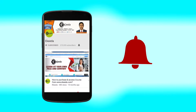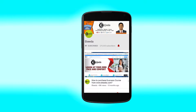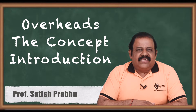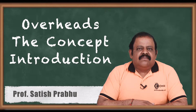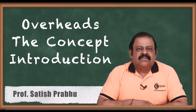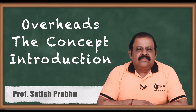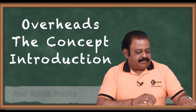Hello friends, today we will understand the concept of overheads. In cost accounting there are different elements of cost, like material cost, labor cost, and others. The main cost involved in calculation of total cost of any product is overheads. Let us see the definition of overheads.